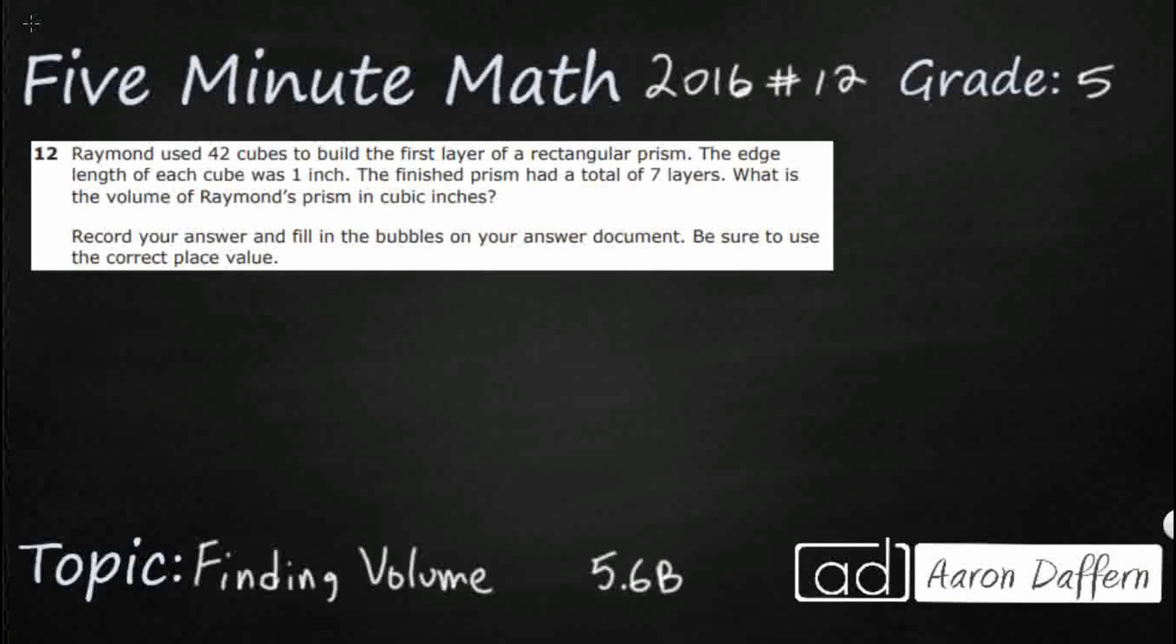So Raymond used 42 cubes, that's going to be important, to build the first layer of a rectangular prism. We need to be thinking of a rectangular prism here. The edge length of each cube is 1 inch, so that lets us know that we're dealing with inches here, and that each cube is just 1 inch. If they were 2 inches or 3 inches, that would totally shift everything. The finished prism had a total of 7 layers. So what is the volume of Raymond's prism in cubic inches?